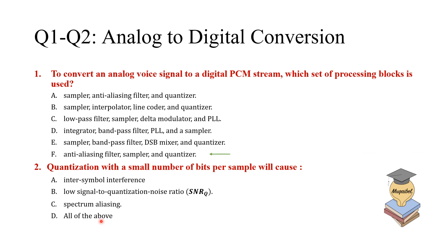The answer to the first question is anti-aliasing filter, sampler, and then quantizer. This is the right sequence. Of course, we'll have encoder then. For the second question, we will get low signal to noise ratio, or low SNR-Q. Now, let's move to the third question.